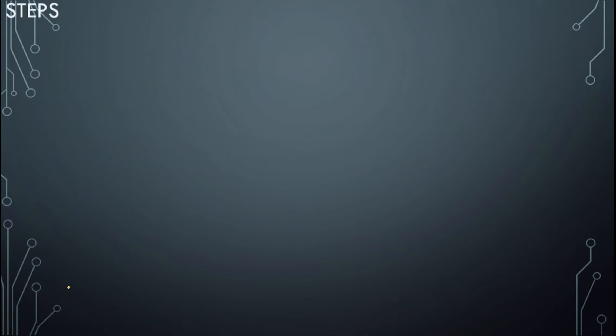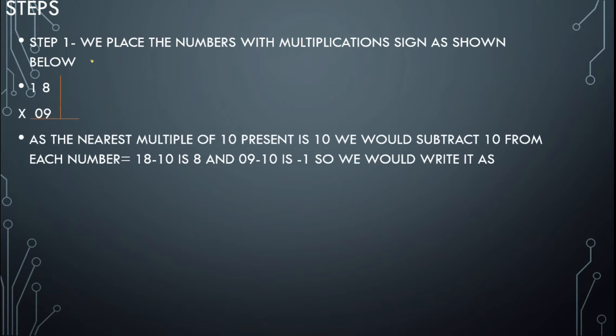Steps for this kind of base method: We place the numbers below with multiplication sign as shown. As the nearest multiple of 10 present is 10, we would subtract 10 from each number. 18 minus 10 is 8, and 9 minus 10 is minus 1, so we write it like this.